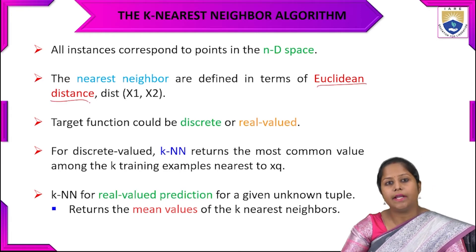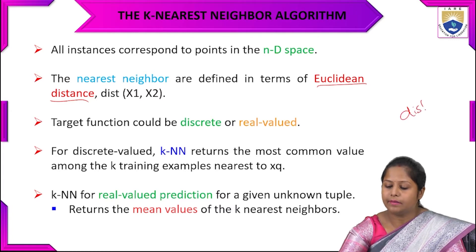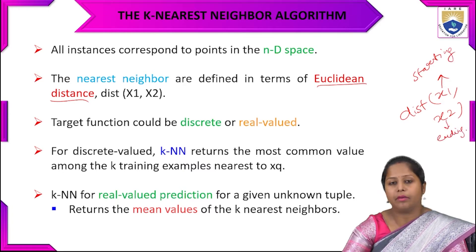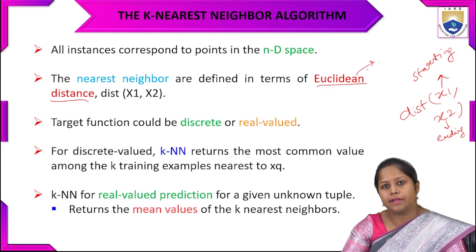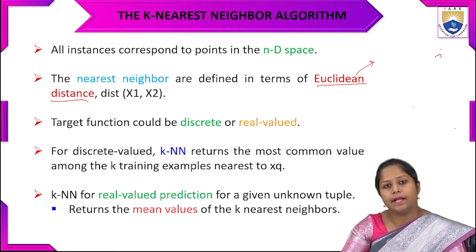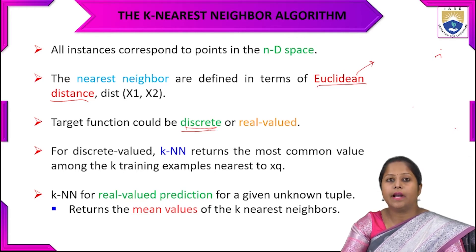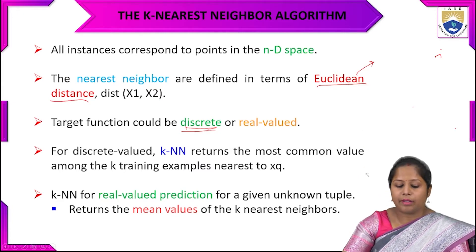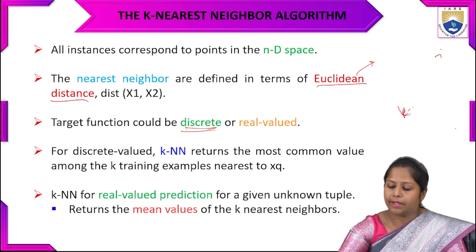The Euclidean distance is measured between the first point and the second point — the starting and ending points of the neighbor. From this formula we calculate the distance for the nearest neighbor. The target function can be discrete as well as real-valued. For discrete values, the K-nearest neighbor returns the most common value among the K training examples.